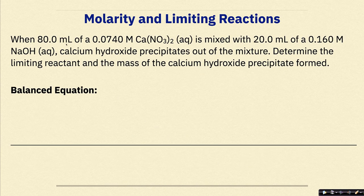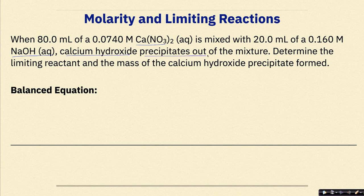Let's look at an example. When 80 milliliters of a 0.0740 molar calcium nitrate solution is mixed with 20 milliliters of a 0.160 molar sodium hydroxide solution, calcium hydroxide precipitates out of the mixture. Determine the limiting reactant and the mass of the calcium hydroxide precipitate formed. The first thing we need to do before any calculation is figure out our balanced equation.